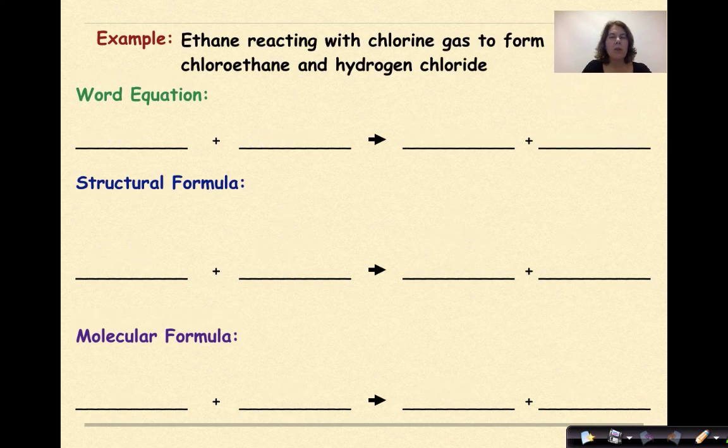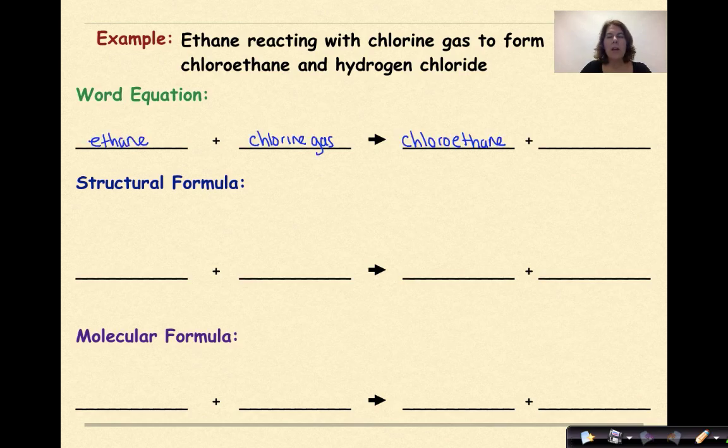Ethane reacting with chlorine gas to form chloroethane and hydrogen chloride. So we'll have ethane as one of our reactants, reacting with chlorine gas to form chloroethane and hydrogen chloride.